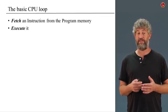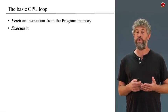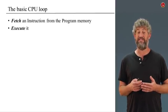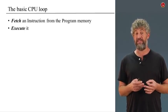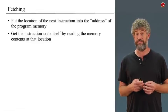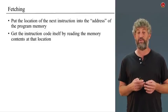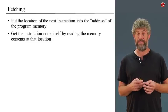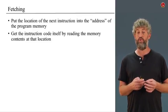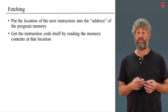Let's first talk about fetching. How do you get the next instruction that you need to execute? Where is the next instruction located? It's in the program memory, it's in the memory. Where in the memory? In the address that's specified by our program counter. So we need to basically put the location of the next instruction into the address of the program memory, then read the contents of that memory, and we'll get the code of the instruction that we need to execute.